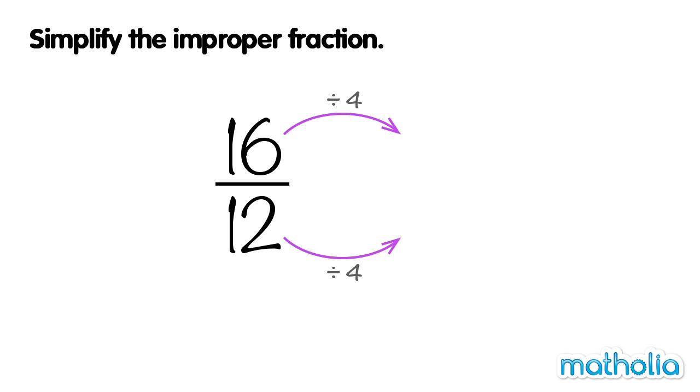16 divide 4 equals 4. 12 divide 4 equals 3. 16 twelfths equals 4 thirds. 4 thirds cannot be simplified any further.